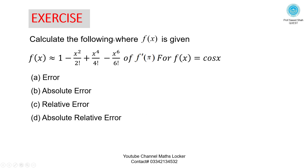Exercise: Calculate the following where f of x is given, f of x approximately equal to this expression, for f dash of pi. Here, instead of f of x, we have f dash of pi — a derivative. First, take the derivative of the approximate function, and also the derivative of the exact function, then put in pi and calculate the error, absolute error, relative error, and absolute relative error.